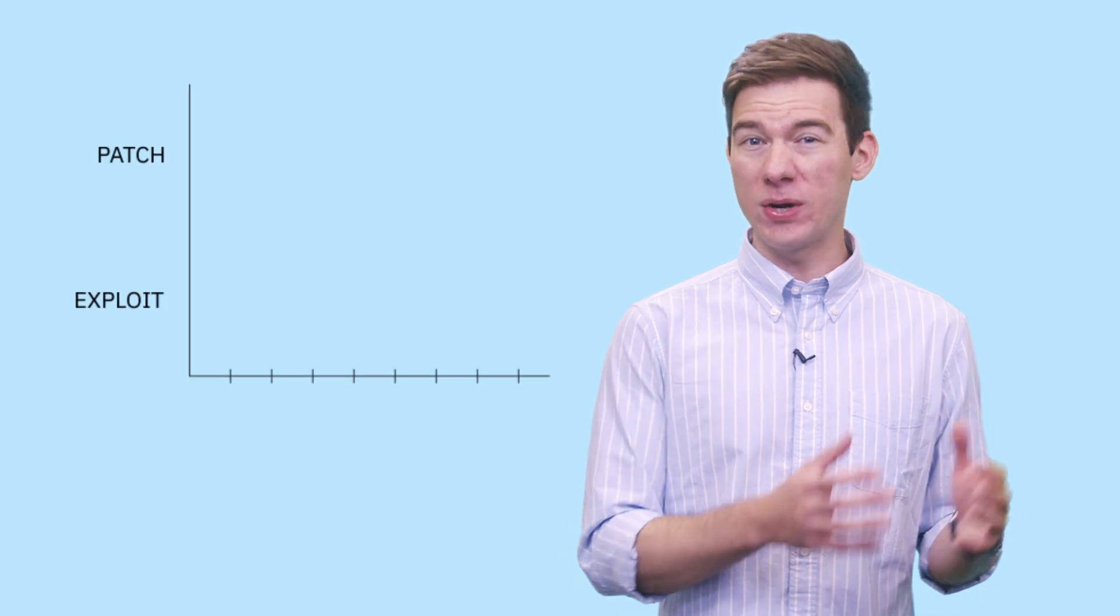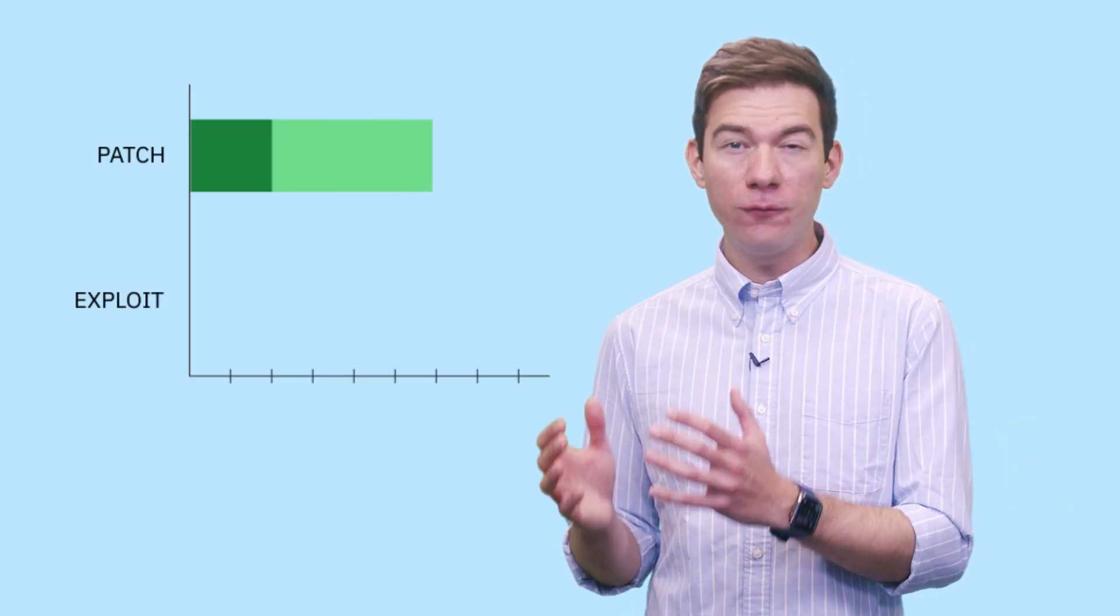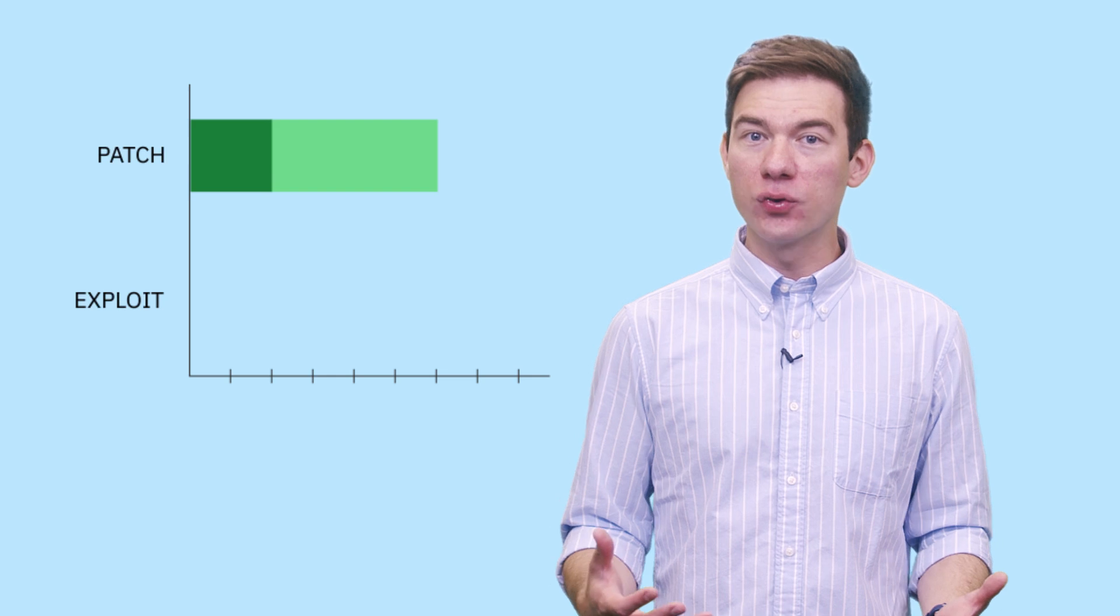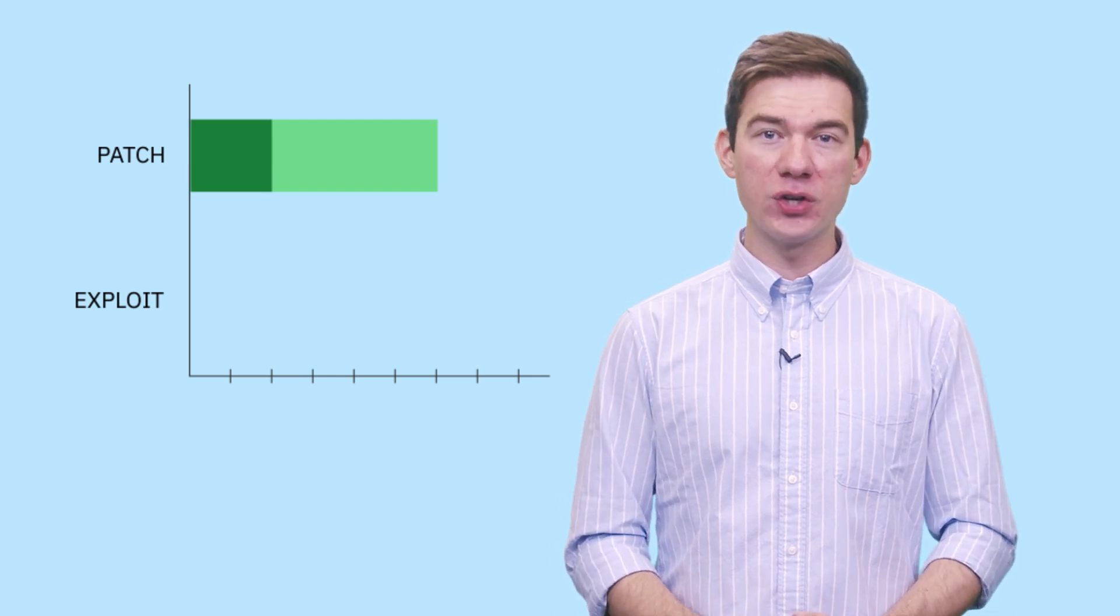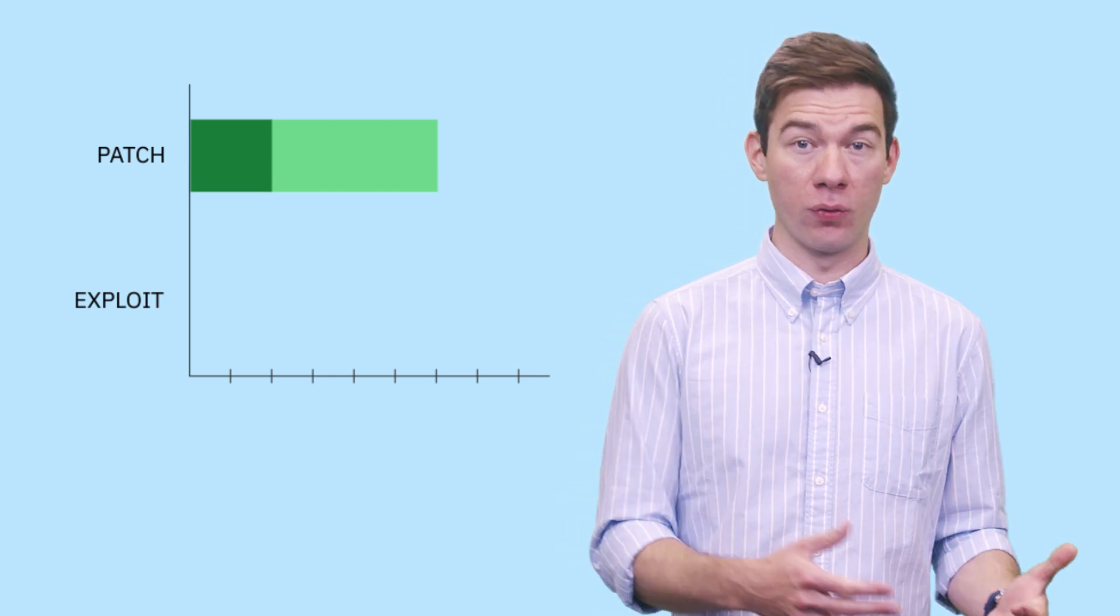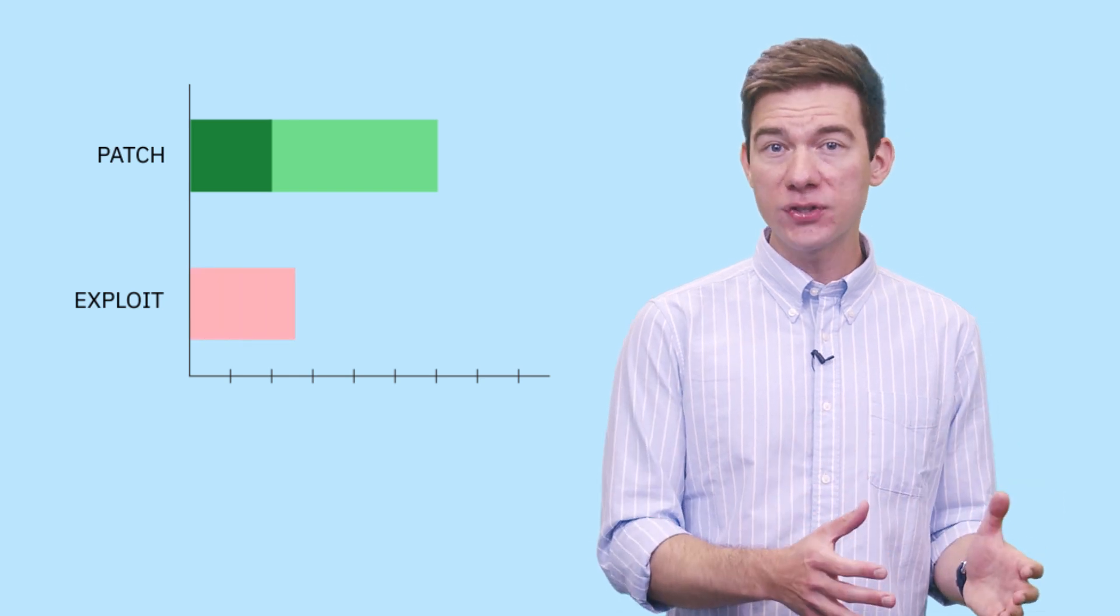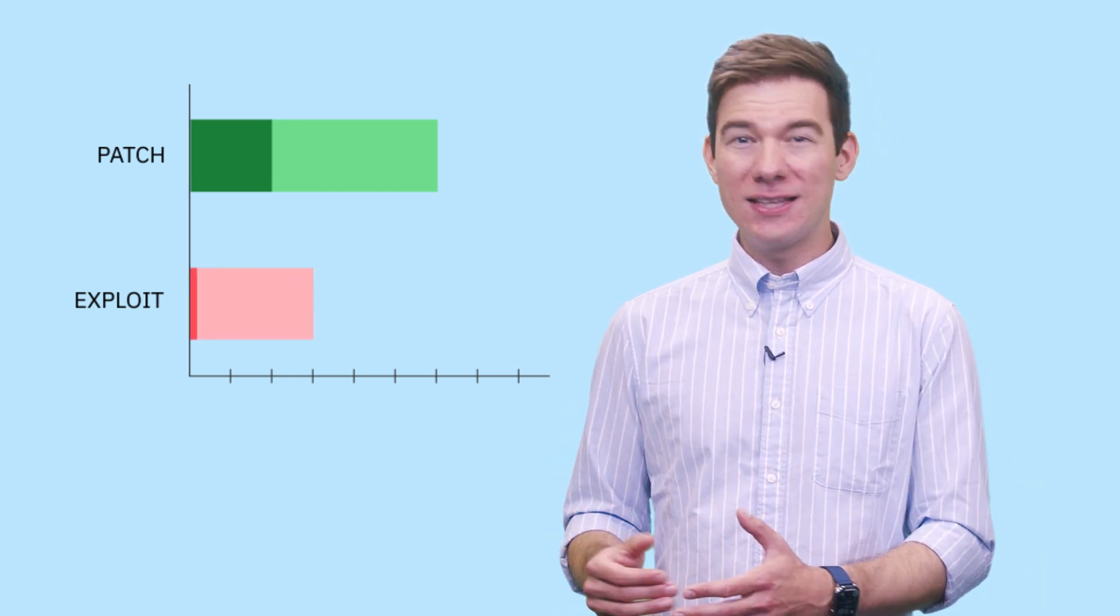To make matters worse, patching a vulnerability typically takes between 60 to 150 days, while adversaries have dramatically cut the average time it takes them to exploit a vulnerability from three months to three days. This makes it abundantly clear why the find and fix approach alone is too slow.